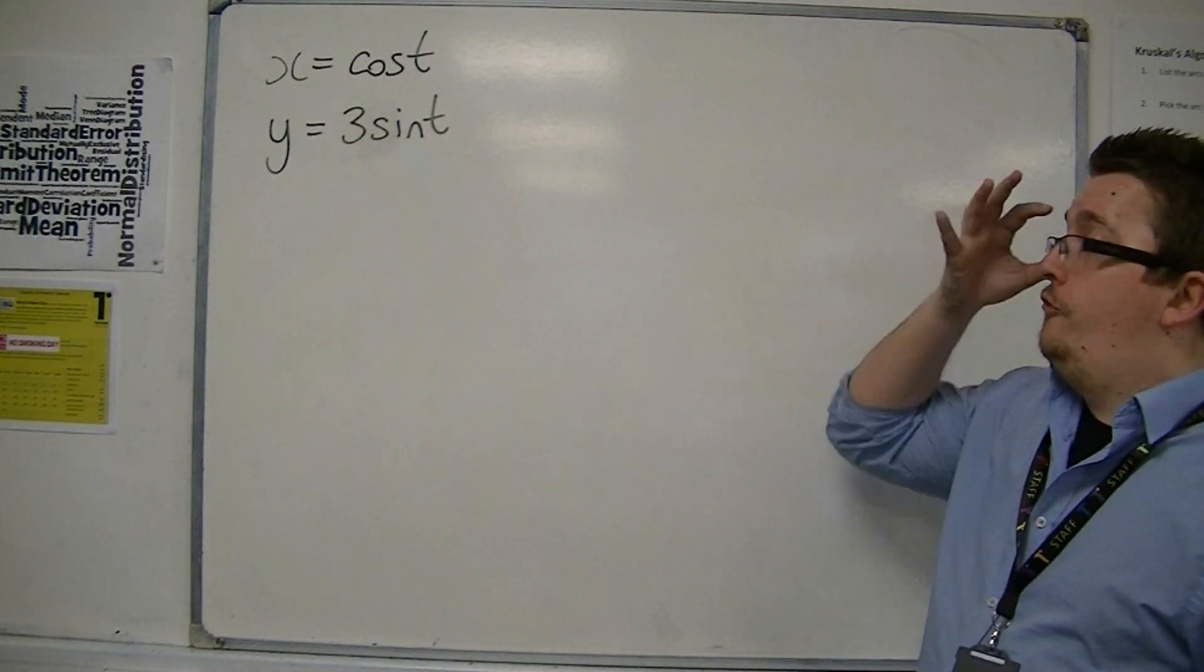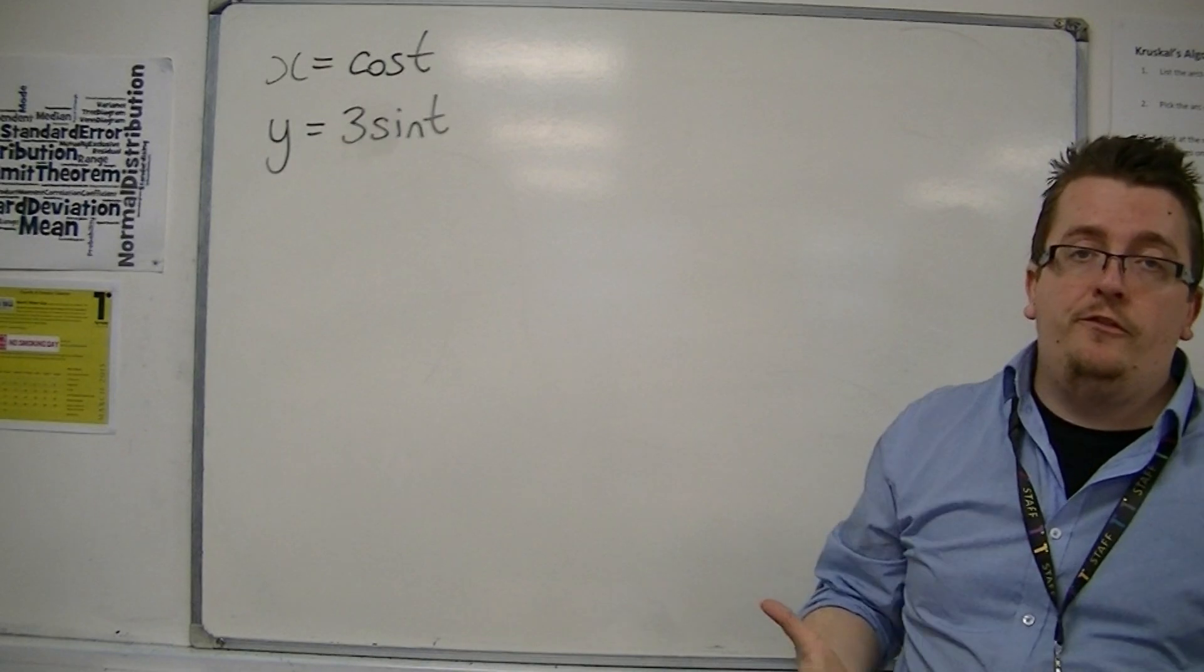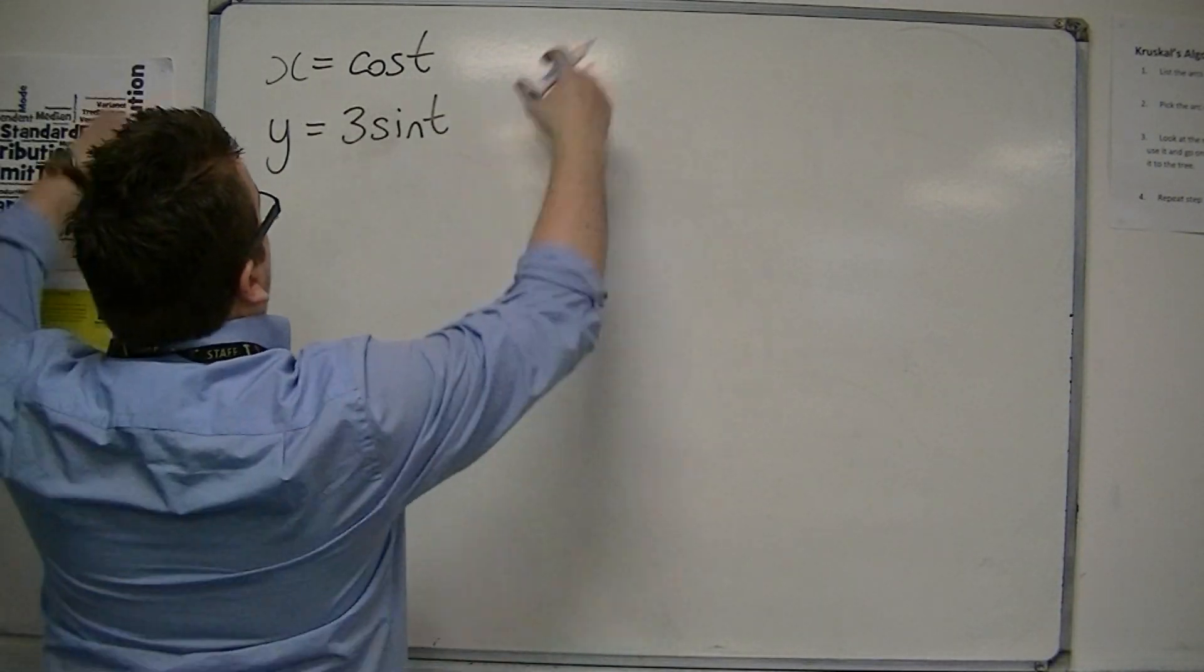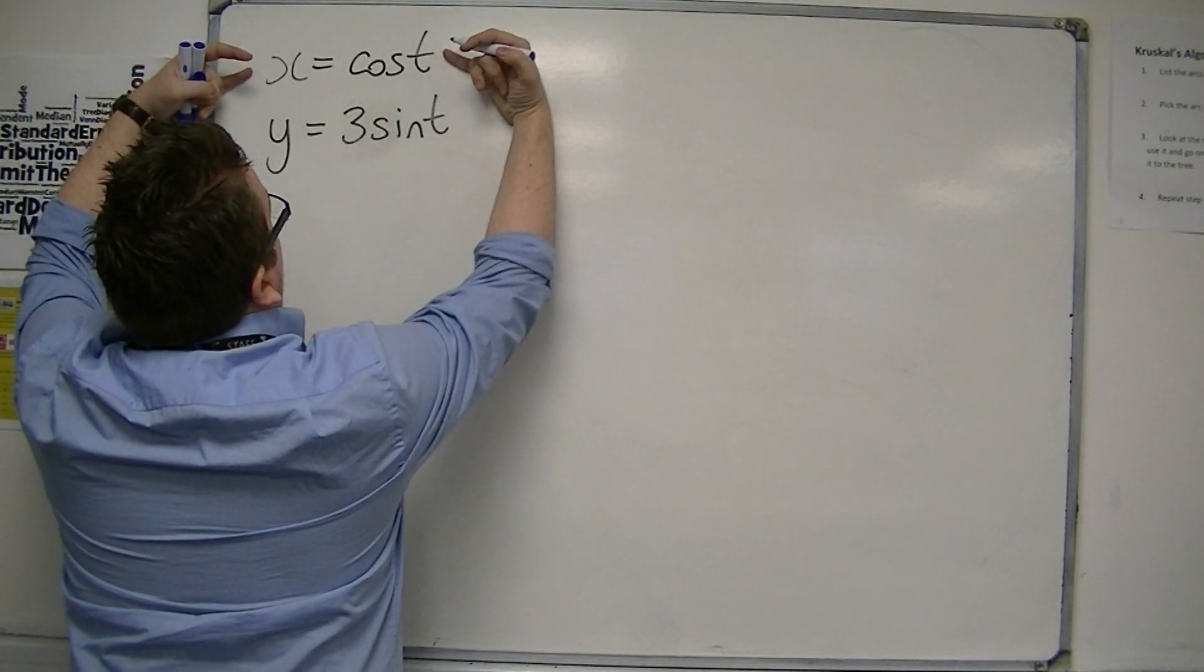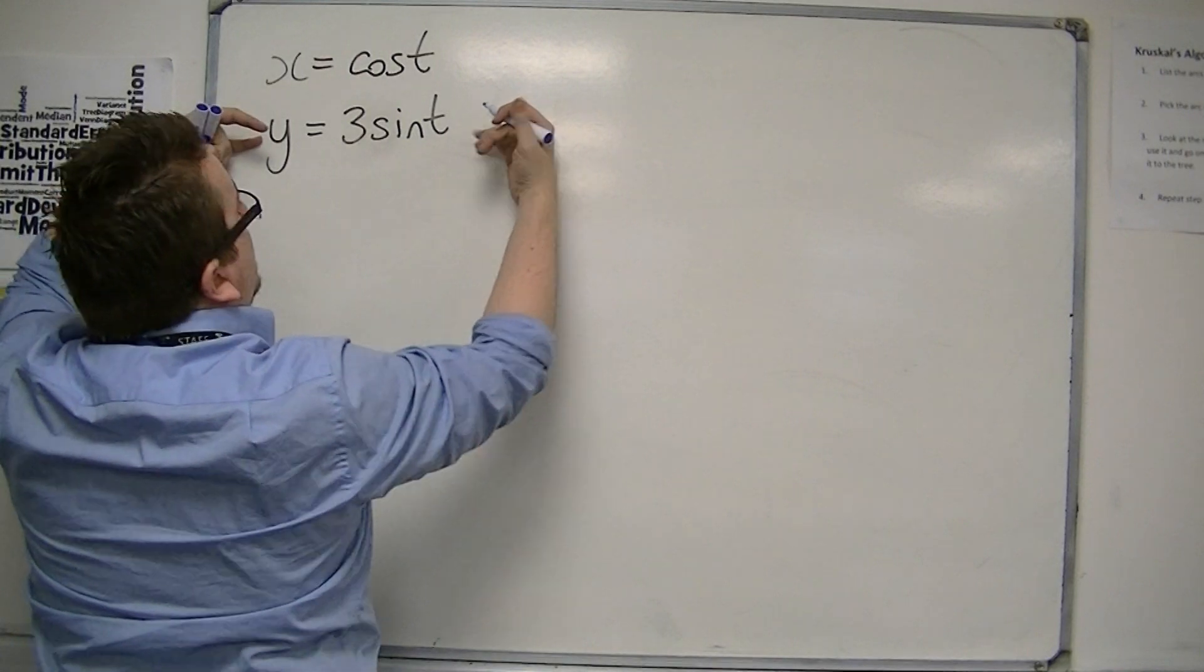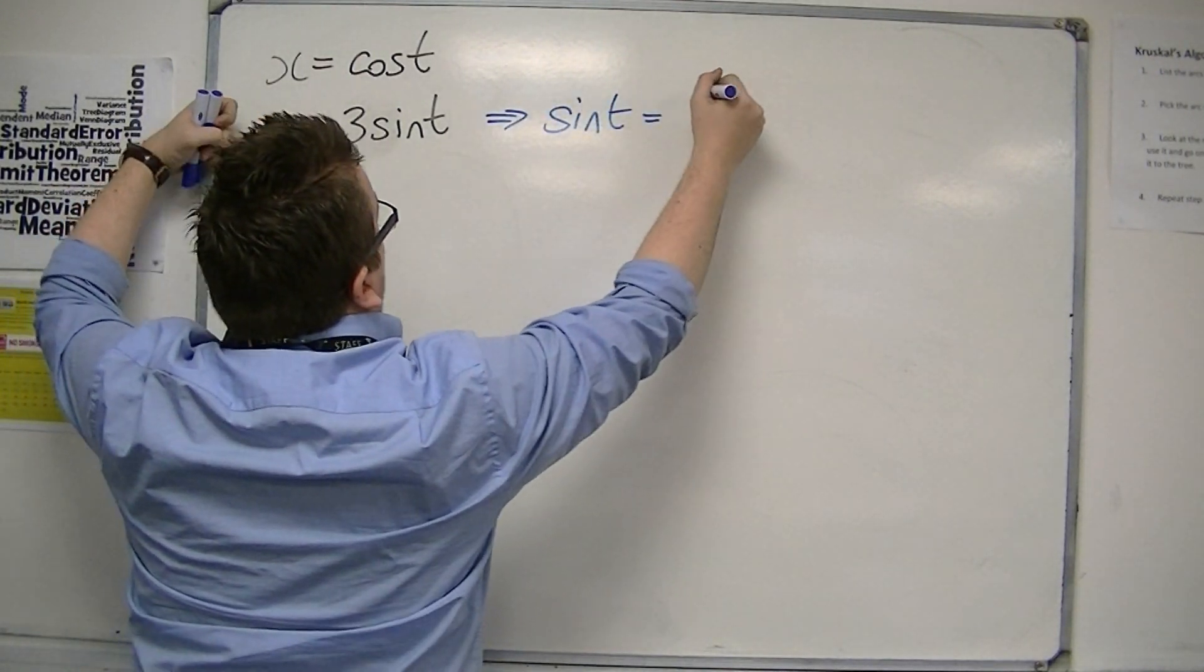If I had to go from parametric equations like these to a Cartesian form, the easiest way to do it is to rewrite cos t as x, which it already is. But the second equation can be reordered to get sine t is y over 3.